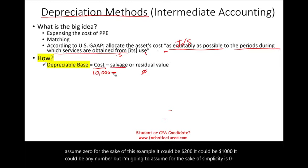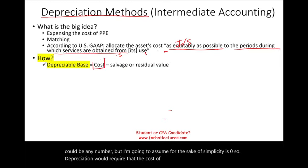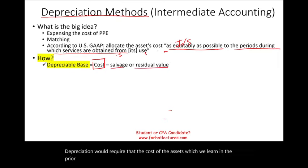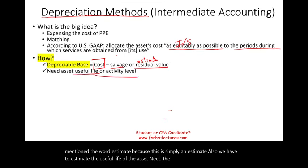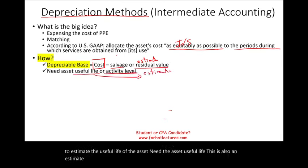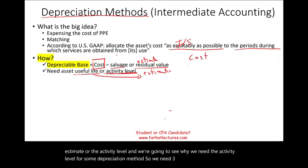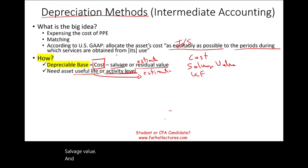So depreciation requires the cost of the asset, which we learned in the prior recording, plus an estimate of the salvage or residual value — and remember, this is simply an estimate. Also, we have to estimate the useful life of the asset, or the activity level, which we'll need for some depreciation methods. So we need three things: cost, salvage value, and the life or the activity.